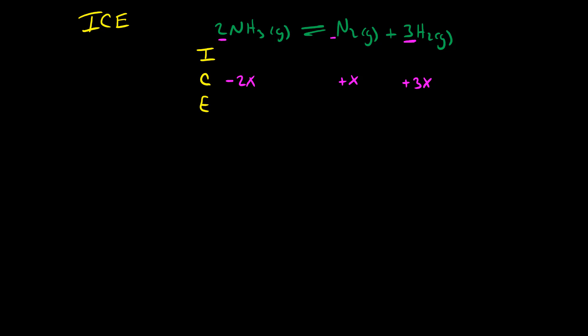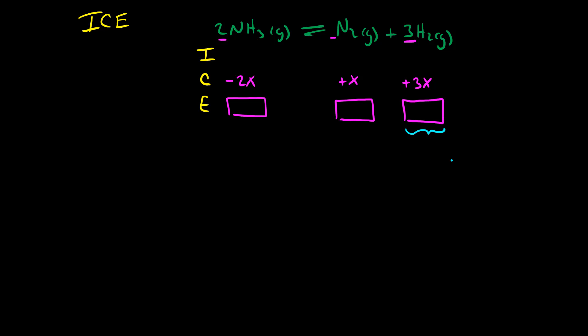You just add up the initial and the change to get the equilibrium. That's why ICE tables are really useful — they allow you to express the equilibrium conditions in terms of a single variable. In the previous video, we saw that was useful when calculating K if we were explicitly told one of the equilibrium concentrations. Since we knew the concentration of hydrogen at equilibrium, we could solve for X, and once we know X, we can calculate the equilibrium concentrations of everything else. In this video, let's use this ICE table to solve a similar problem.